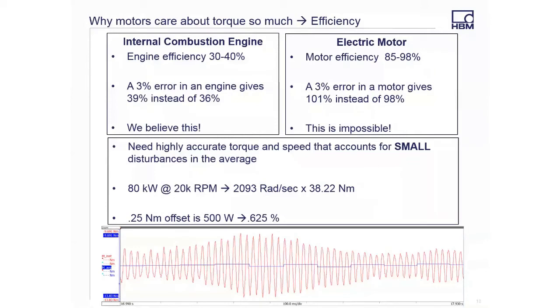You need the accuracy to measure those ripples and the bandwidth to handle them. This just prevents you from measuring for one minute instead of 10 seconds.